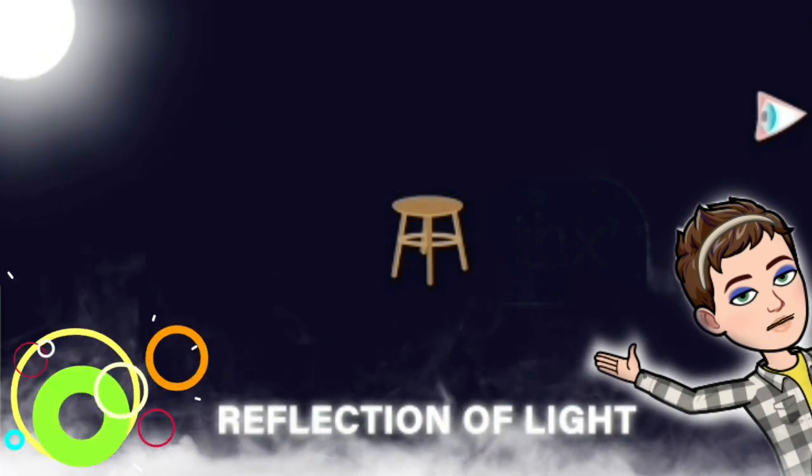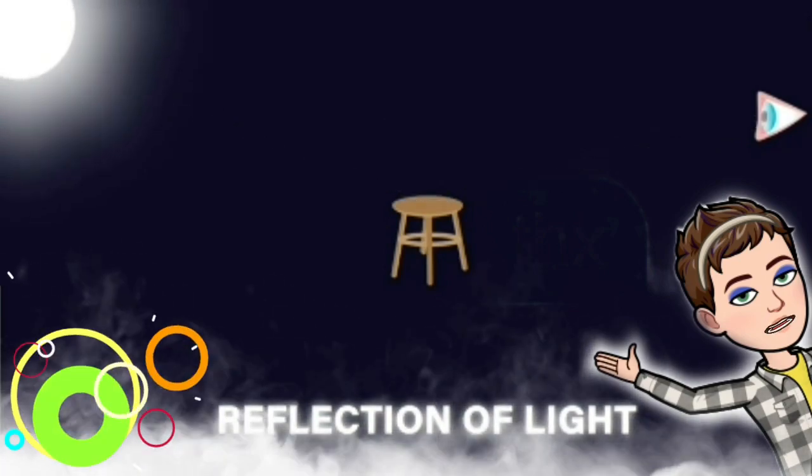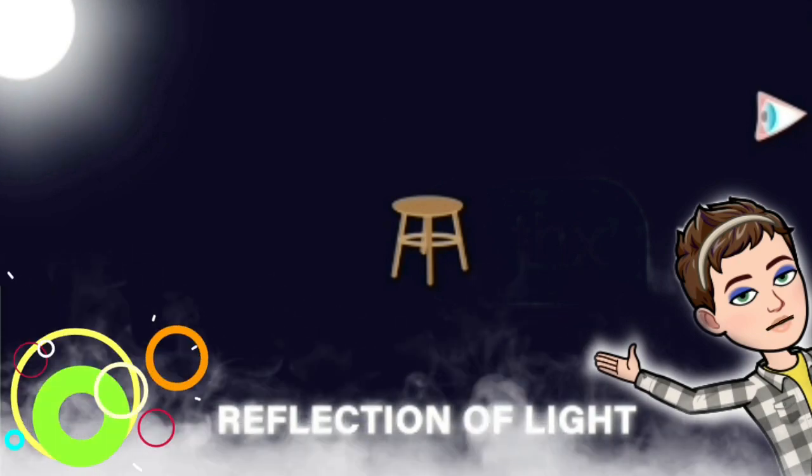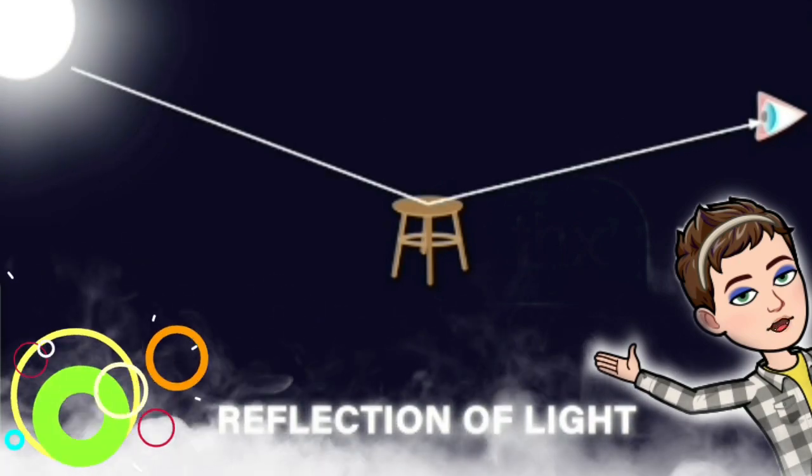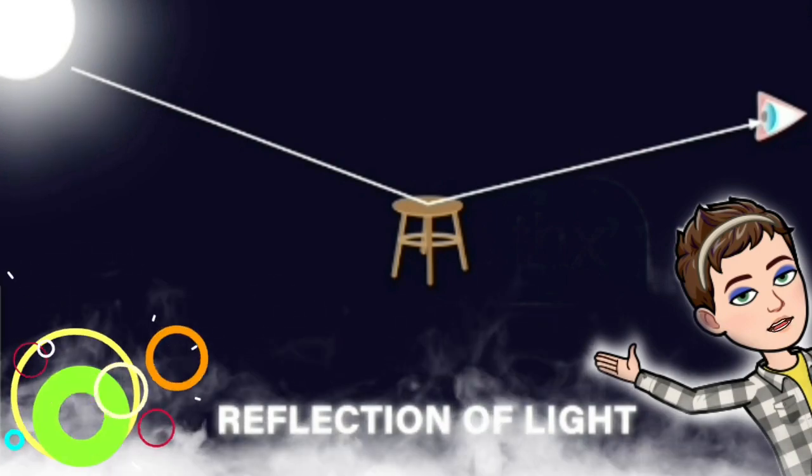So, how can we summarize this? We are able to see non-luminous objects because they reflect the light of the luminous object falling on their surfaces.